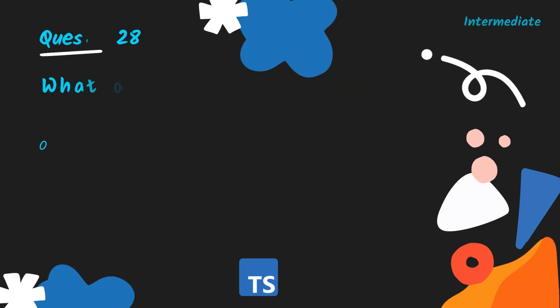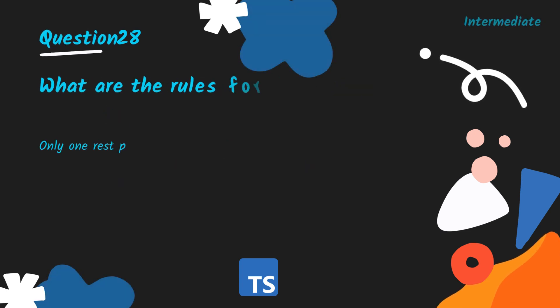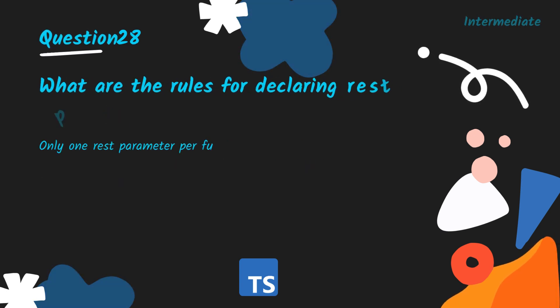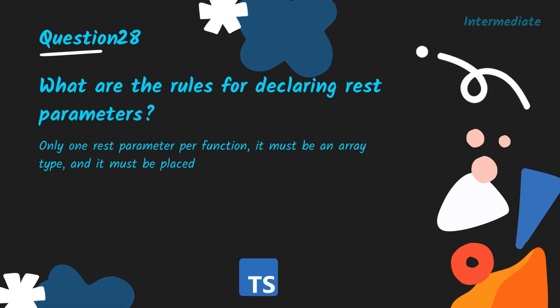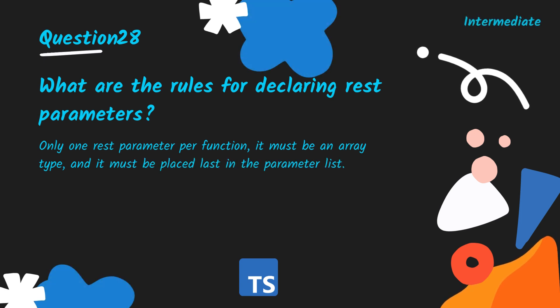What are the rules for declaring rest parameters? Only one rest parameter per function, it must be an array type, and it must be placed last in the parameter list.